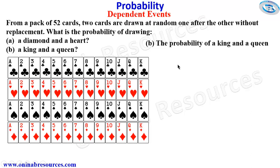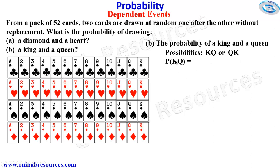We then go to part B of the problem: the probability of a king and a queen. We also have some possibilities there. Either you pick the first one king and the second one queen, or we pick the first one queen and the second one king. So we then look at the probability of picking the first one king and the second one queen — that's going to be probability of drawing king times probability of drawing queen.